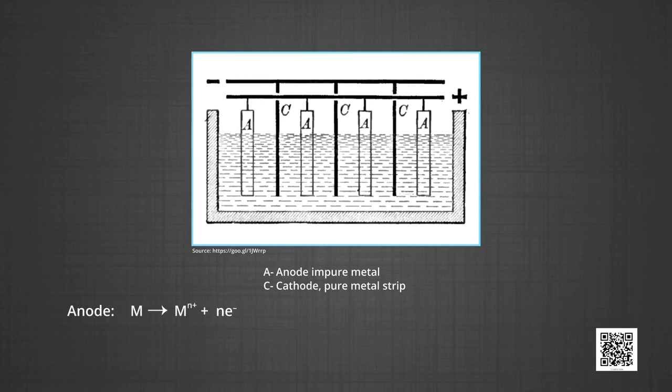The reactions are, at anode, the metal gets oxidized to form metal ion and releases electrons. The electrons travel through the wire and at cathode, the metal ions pick up these electrons to form metal.